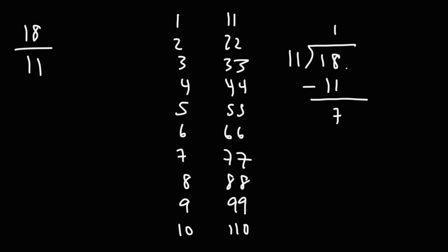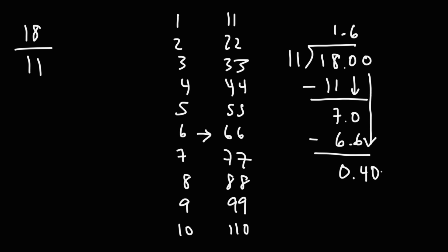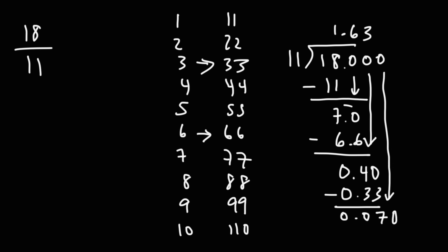11 does not go into 7, so we need to add a 0. We're going to treat 7.0 as if it's 70. The highest multiple of 11 under 70 is 66, so 11 goes into 70 six times. 11 times 6 is 66. 70 minus 66 is 4, so 7.0 minus 6.6 is 0.4. Let's add a 0, so this becomes 40. 11 goes into 40 three times. 11 times 3 is 33, and 40 minus 33 is 7.